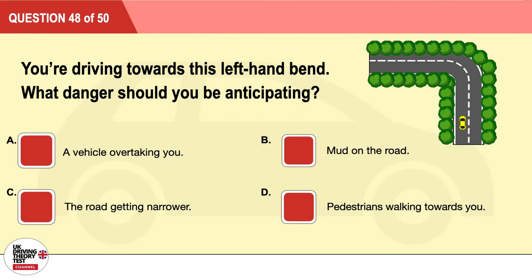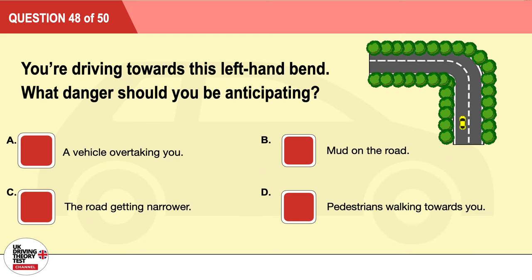Question 48: You're driving towards this left-hand bend. What danger should you be anticipating? A: A vehicle overtaking you. B: Mud on the road. C: The road getting narrower. D: Pedestrians walking towards you. The correct answer is D: pedestrians walking towards you.